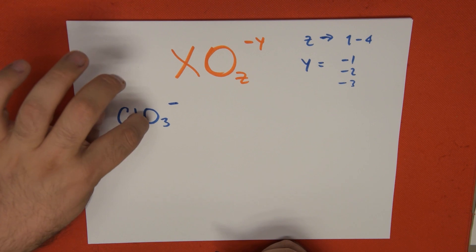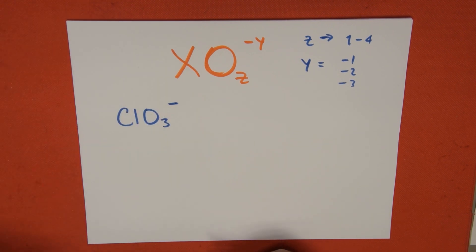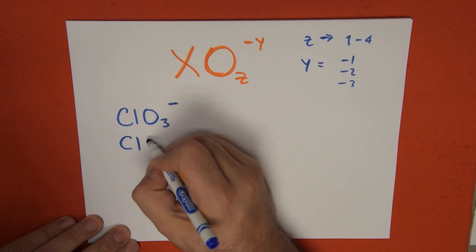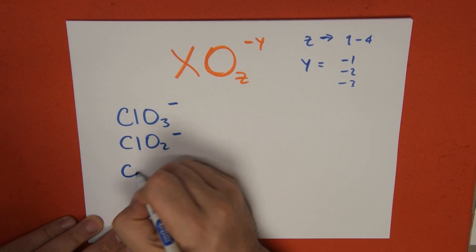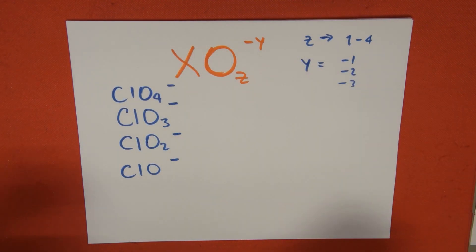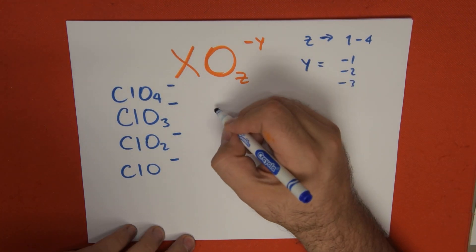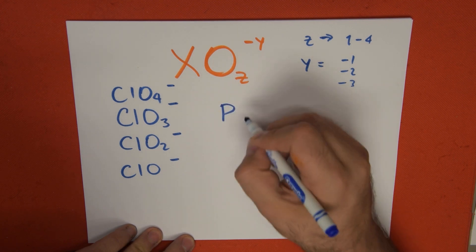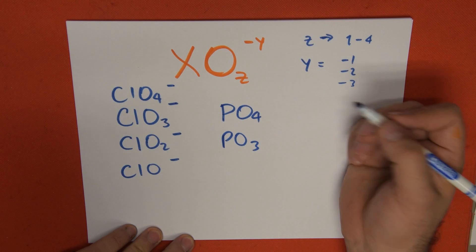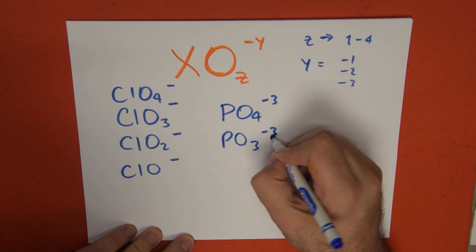Chlorine, oxygen, 3 atoms of it, and a negative 1 charge. There are also other chlorine oxyanions, such as ClO2, ClO, and of course ClO4. Let's take another example. We can have oxyanions with phosphorus, PO4, PO3. What are we missing? Negative charge, negative 3, negative 3.